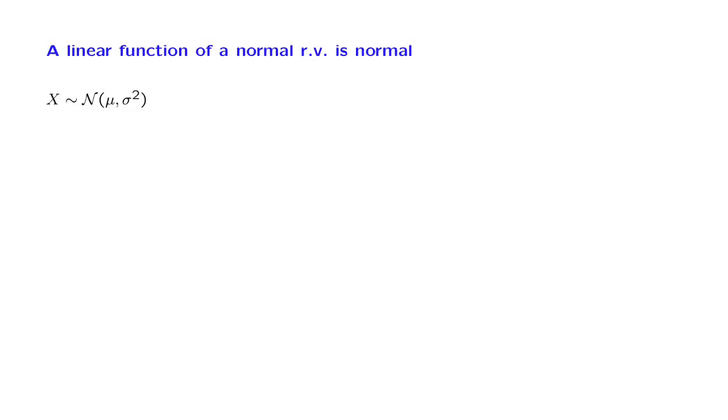Let us now consider an application of what we have done so far. Let x be a normal random variable with given mean and variance. This means that the PDF of x takes the familiar form.